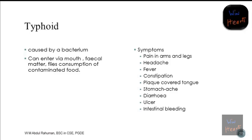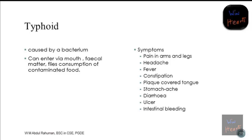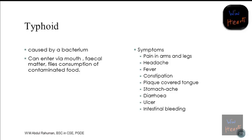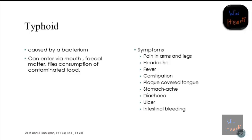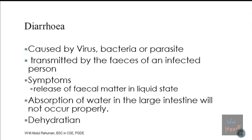When typhoid becomes more aggressive, there may be constipation, and a white plaque that covers the tongue. Plaque on the tongue means it is completely covered with white material. You can also see plaque building on the teeth. If it goes further, you may get stomachache, then diarrhea, and finally ulcers and intestinal bleeding may occur, with blood in the stool.